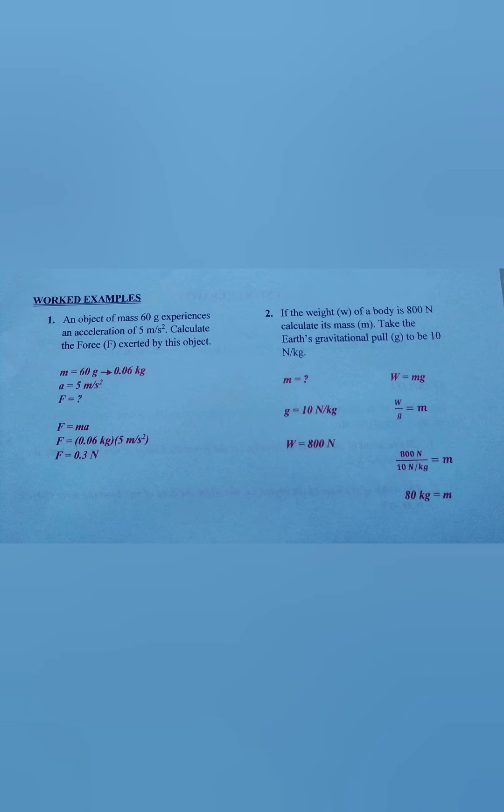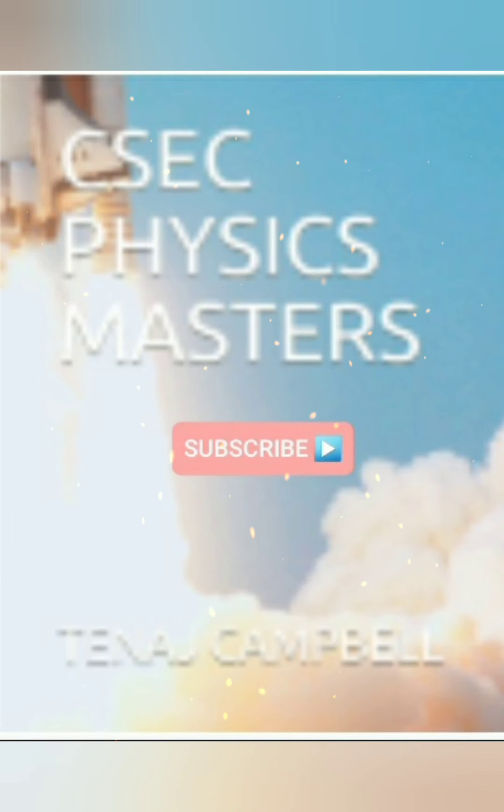After which we substitute 800 Newtons divided by 10 Newtons per kilogram equals m. And then we simply solve. With that being said, we are now at the end of the topic of forces. Please remember to like, share and subscribe. And remember to review these videos whenever you have tests so that they can help you in passing your exams. Thank you.